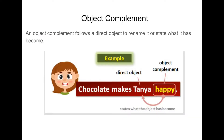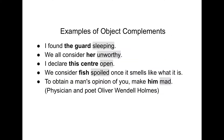An object complement follows a direct object to rename it or state what it has become. Chocolate makes who? Makes Tanya — that's the direct object. Happy describes the direct object, or states what the object has become. More examples: I found the guard sleeping — guard is the direct object, sleeping describes it. We all consider her unworthy — object complement. I declare this center open — object complement. We consider fish spoiled. To obtain a man's opinion of you, make him mad — object complement. In bold are the direct objects; highlighted in gray are the object complements.